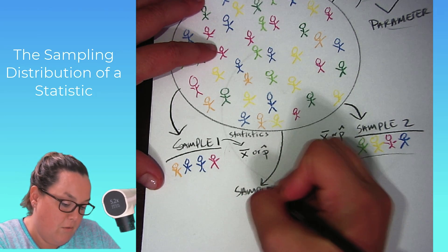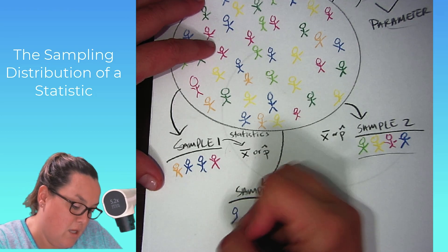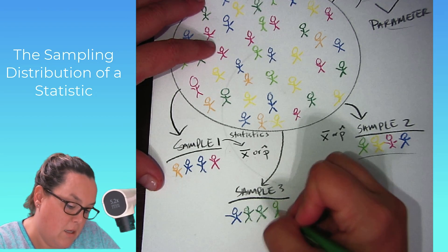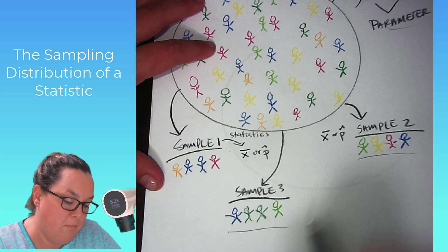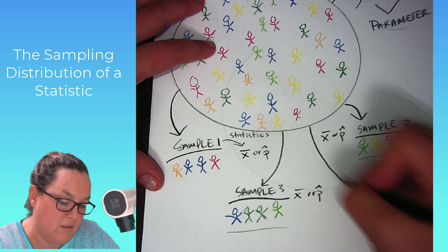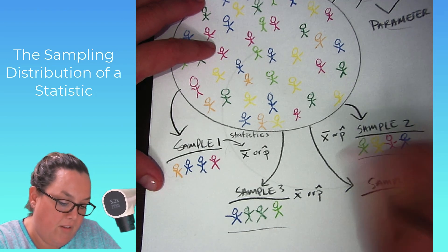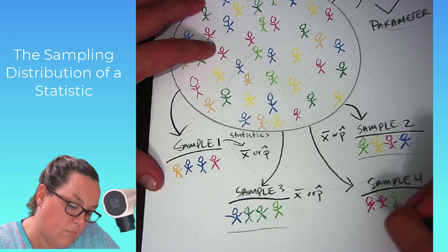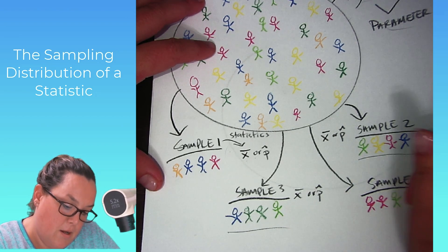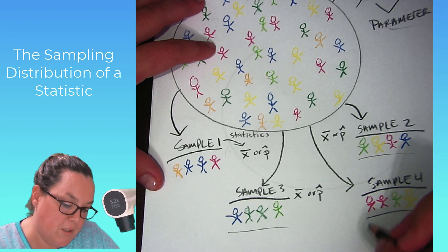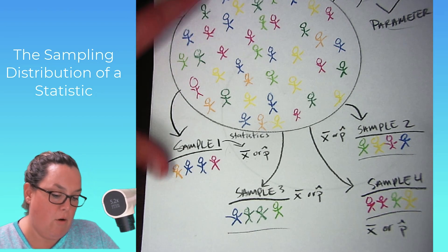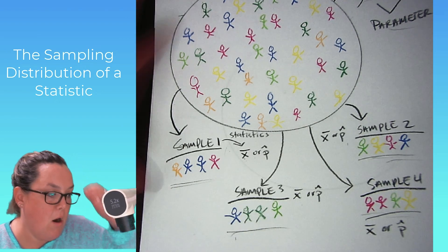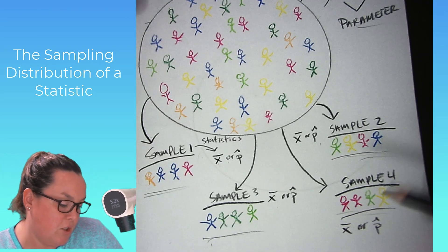If we did it again and took a third sample — this time we get this group, maybe some repeated, maybe this — this is a new, different random sample, so they probably have their own x-bar and p-hat as well. If we took a fourth sample, it'd be a different random sample, so I'd expect a different value of x-bar and p-hat again.